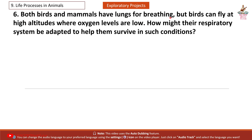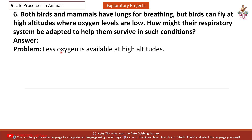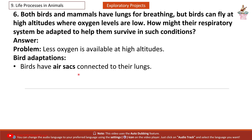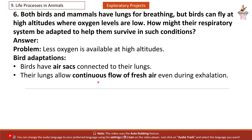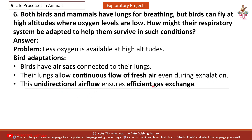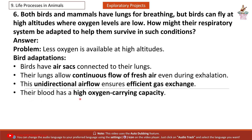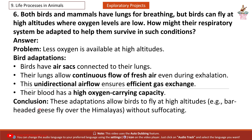Exploratory Project 6: Both birds and mammals have lungs for breathing, but birds can fly at high altitudes where oxygen levels are low. How might their respiratory system be adapted? Answer: Birds have air sacs connected to their lungs, allowing continuous flow of fresh air even during exhalation. This unidirectional airflow ensures efficient gas exchange. Their blood also has a high oxygen-carrying capacity. Example: Bar-headed geese fly over the Himalayas without suffocating.